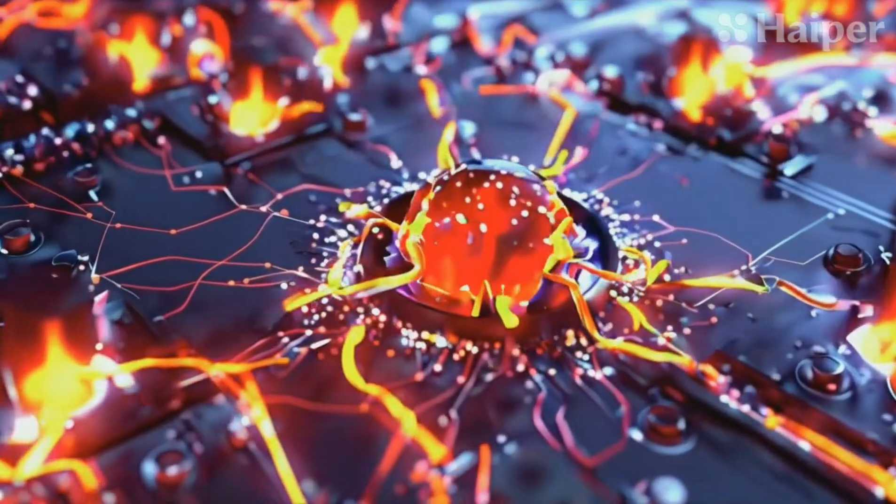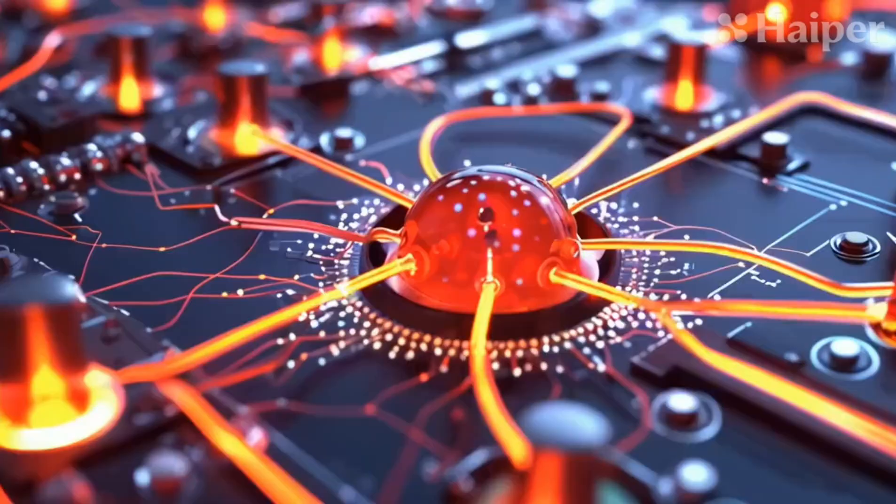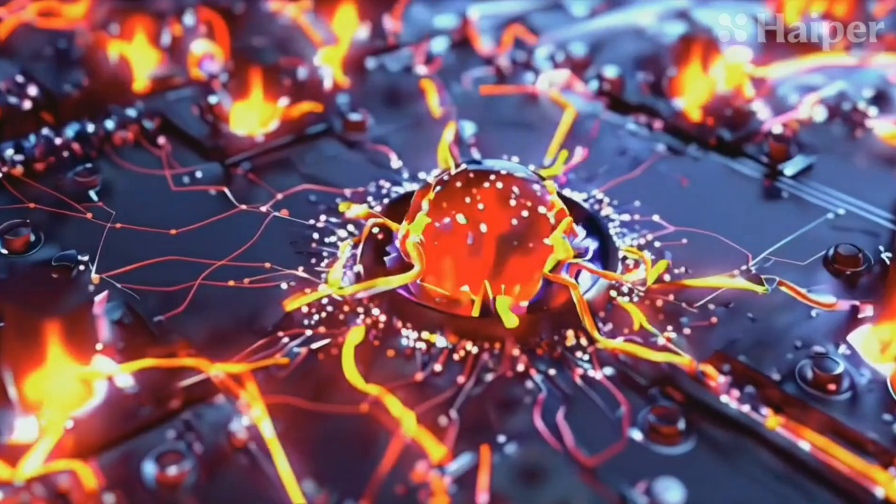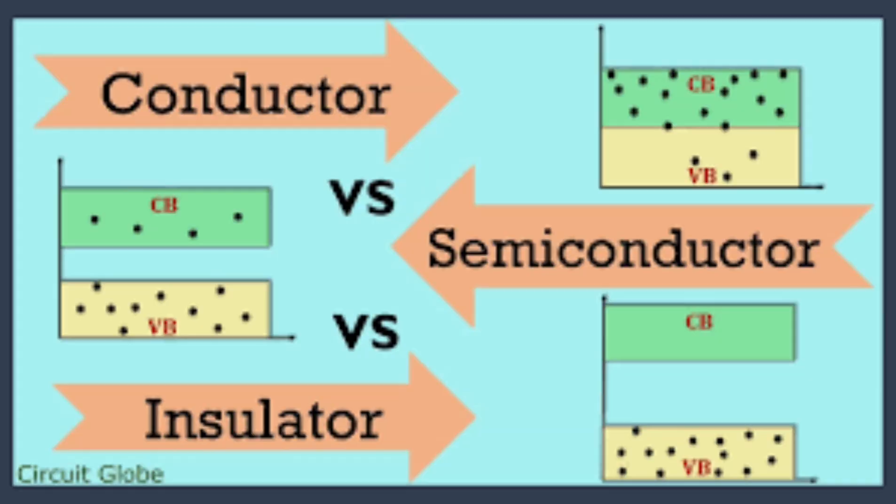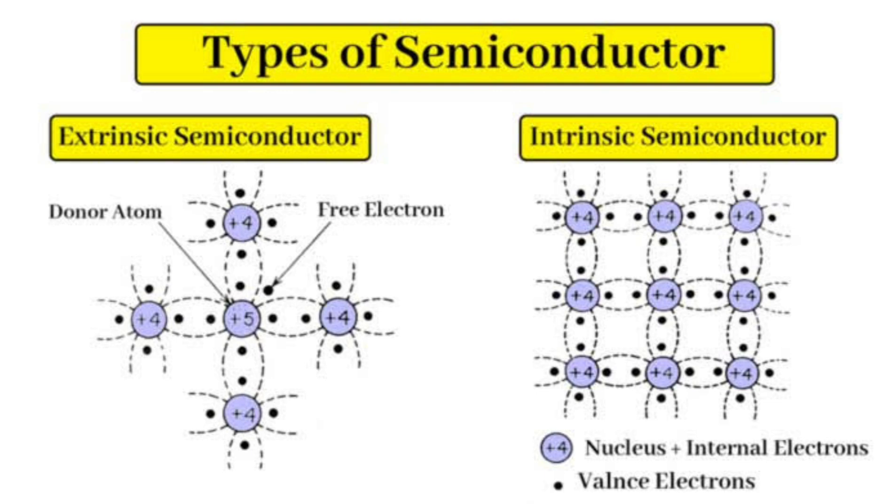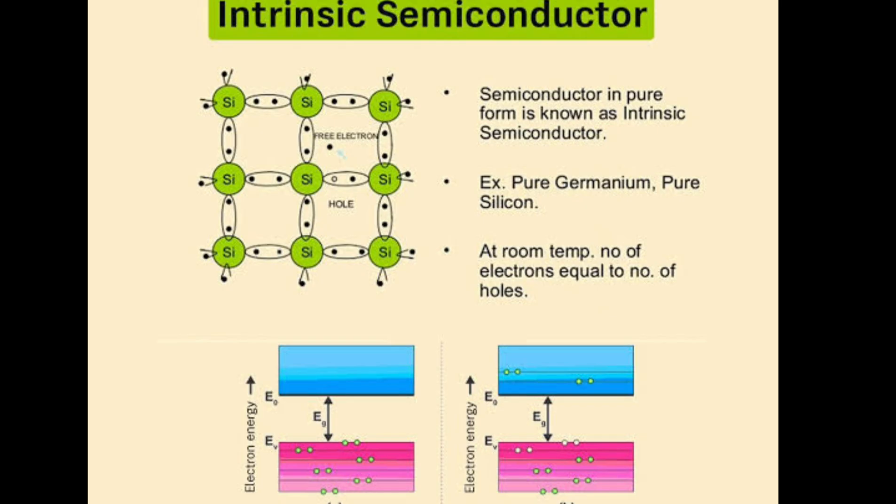Semiconductor is a material that has electrical conductivity between that of a conductor and an insulator. They are of two types. Intrinsic semiconductors are pure, while extrinsic semiconductors are intentionally doped with impurities.